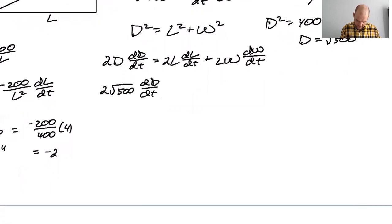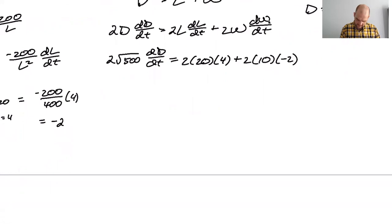2D dD/dt is 2 times L is 20 times dL/dt is 4 plus 2 times W is 10 times dW/dt is negative 2. So 2D dD/dt is 8, 160, 4, minus 40 over, should I make it to 10 root 5? I probably should, right? So it's like 10, 10, 20, 20 root 5.